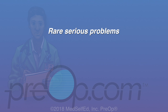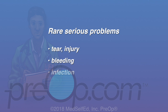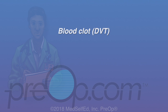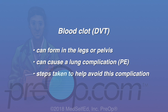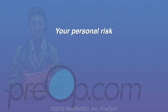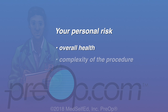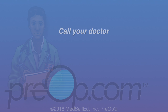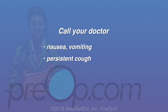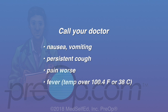Rarely, serious problems may occur such as a tear or an injury to the upper GI tract. Severe bleeding or infection may result. A blood clot or DVT can form in the legs or pelvis during or after any surgery, and it can cause a lung complication called a PE or pulmonary embolism. Steps are taken by your care team to help avoid this complication. Your personal risk relates to your overall health, the complexity of the procedure, and the experience of your physician. Call your doctor if you have nausea, vomiting, a persistent cough, pain that is getting worse, or a fever.